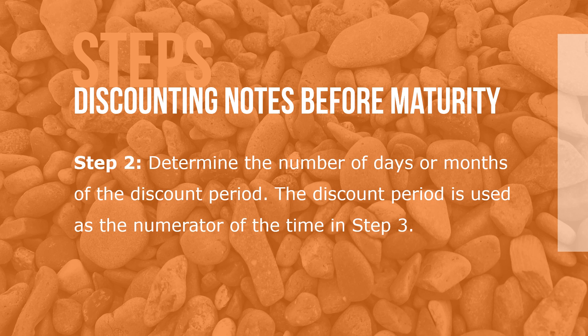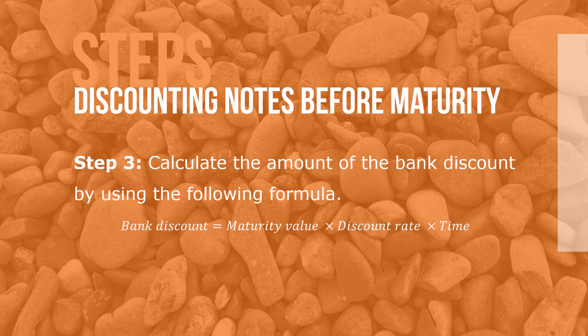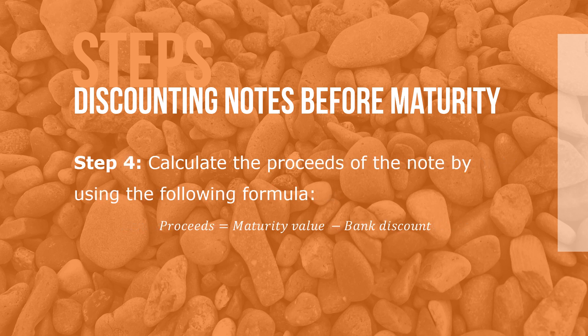Step 3: Calculate the amount of the bank discount using the following formula: bank discount equals maturity value times discount rate times time. Note: use ordinary interest — 360 days — for discounting a note before maturity when the terms are stated in days. Step 4: Calculate the proceeds of the note using the following formula: proceeds equal maturity value minus bank discount.